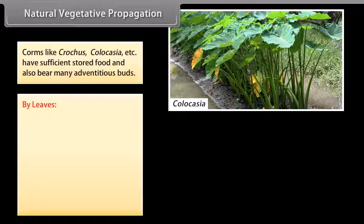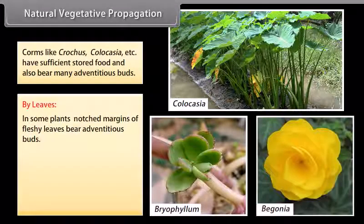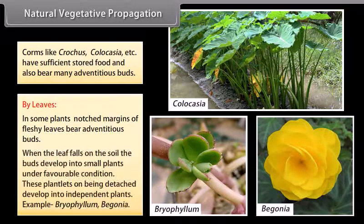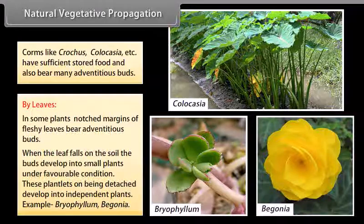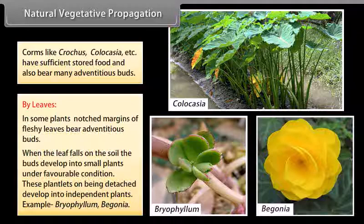By leaves: in some plants, notched margins of fleshy leaves bear adventitious buds. When the leaf falls on the soil, the buds develop into small plants under favorable conditions. These plantlets, on being detached, develop into independent plants. Examples include Bryophyllum and Begonia.